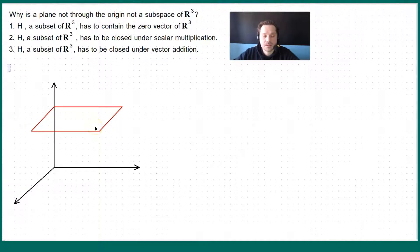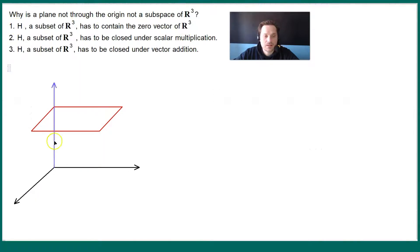Now look, this plane, first of all, fails the first condition that it has to contain the zero vector of R³. Well, the zero vector of R³ is right there. This here is zero, and it's a vector. It's the origin, in other words. Clearly, that plane does not contain it. That's one fact.